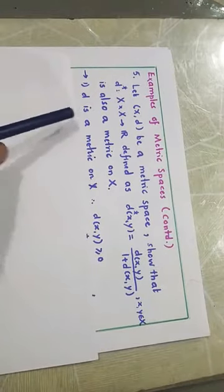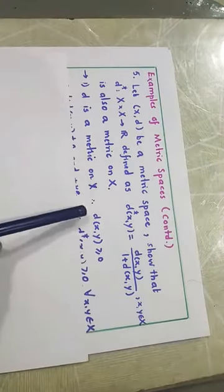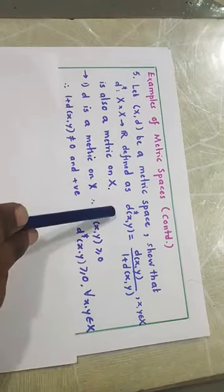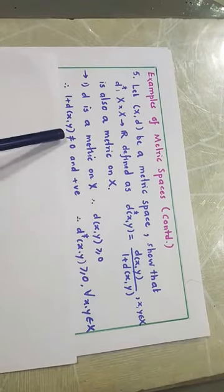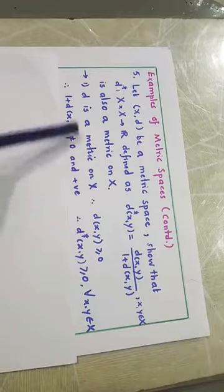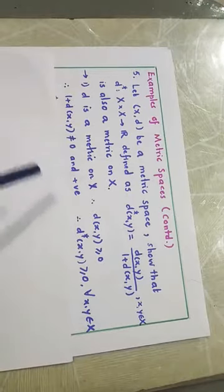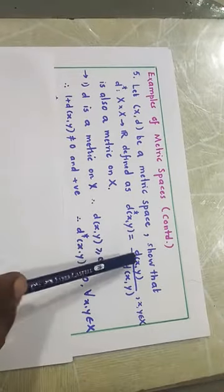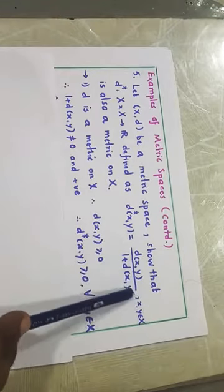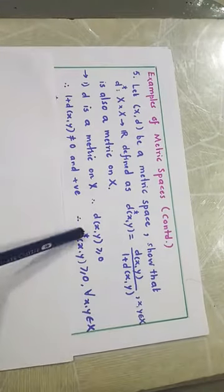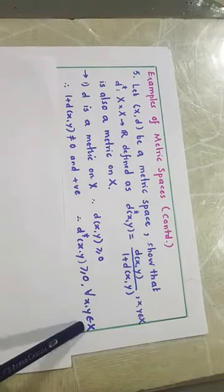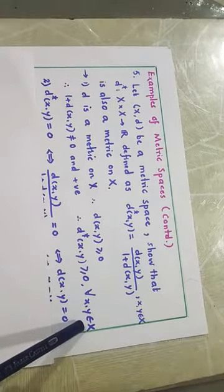First condition: since D is a metric on X, D(x,y) ≥ 0. So 1 + D(x,y) is strictly greater than 0, meaning it is non-zero and positive. Therefore D/(1+D) is greater than or equal to 0, since the denominator is non-zero. Therefore D* ≥ 0 for all x, y belonging to X. This is the first condition satisfied.